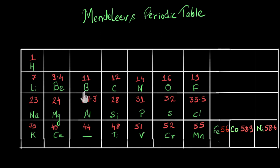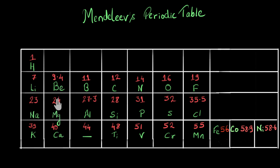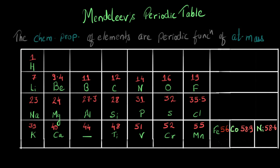They observed that after a period, the properties of the elements were repeating. After chlorine, the properties started to repeat again — potassium had the same properties as sodium and lithium, calcium had the same properties as magnesium and beryllium, and so on. Mendeleev was so surprised that he gave a law based on this: the chemical properties of elements are a periodic function of atomic mass.